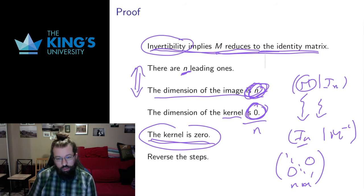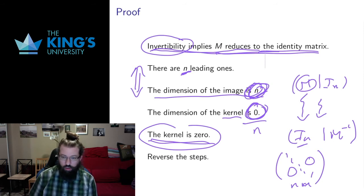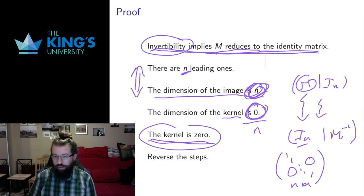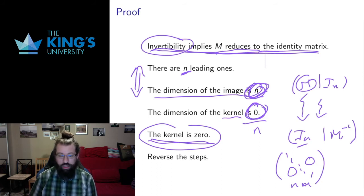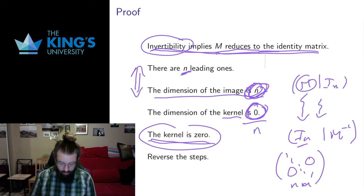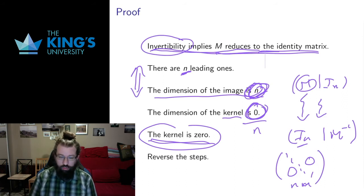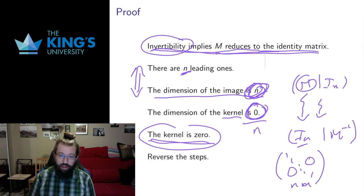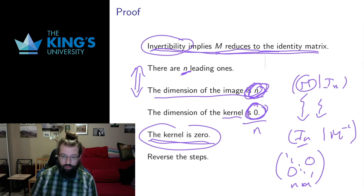Even though the steps are basically reversible, I still have to state that explicitly. If I'm going to make this proof of an if and only if statement, I have to state that I'm going in this direction and then I'm reversing it. Both directions are proved. An if and only if statement requires both directions to be proved. We've proved both, so we can say that a matrix is invertible if and only if its kernel is zero.